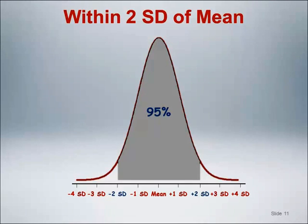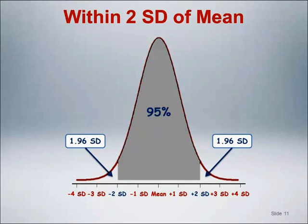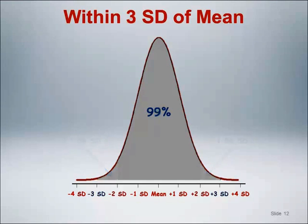Technically, the exact number of standard deviations for 95% of the values is 1.96. I mention it now because the 1.96 represents a special value that we will encounter again in a later module. About 99% of the values in a Gaussian distribution are within three standard deviations of the mean.